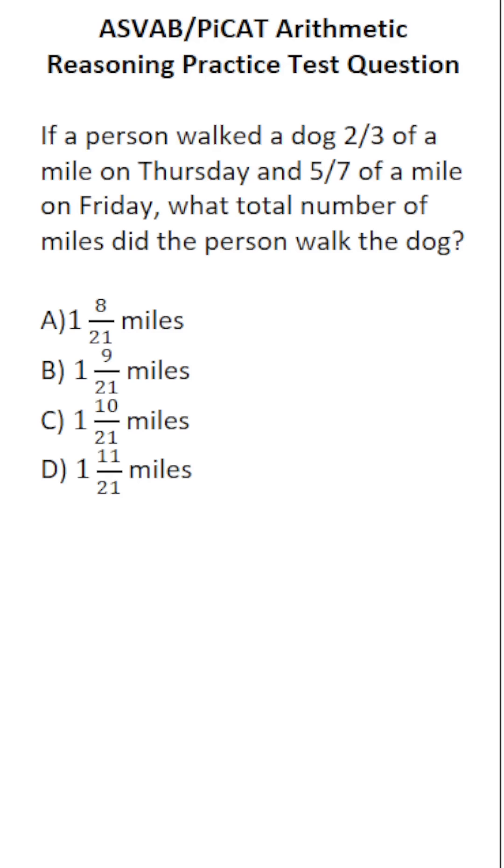This arithmetic reasoning practice test question for the ASVAB and PICAT says, if a person walked a dog two-thirds of a mile on Thursday and five-sevenths of a mile on Friday, what total number of miles did the person walk the dog?